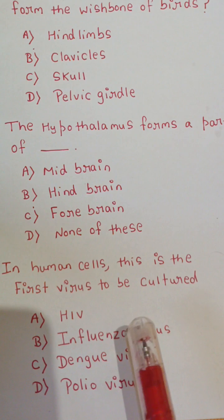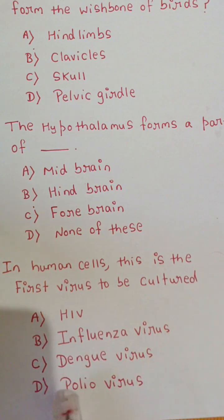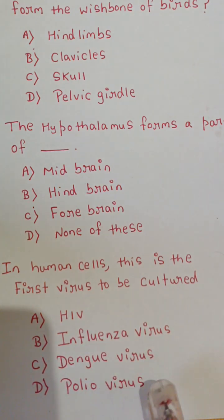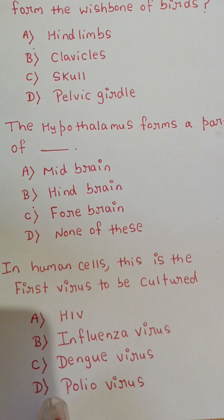In human cells, this is the first virus to be cultured: A) HIV, B) Influenza virus, C) Dengue virus, or D) Polio virus. The correct option is D: Polio virus.